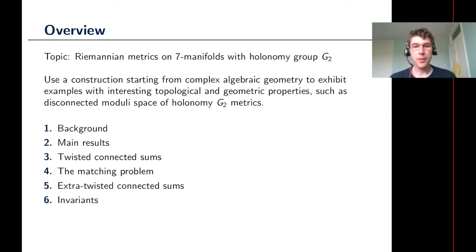The work I'm going to talk about is how to use various versions of a construction that starts from complex algebraic objects and then uses that to produce examples of closed seven-manifolds with Riemannian holonomy G2, and then studies various topological and geometric properties of those examples. For instance, one can show things like the existence of closed seven-manifolds where the moduli space of holonomy G2 metrics is disconnected.